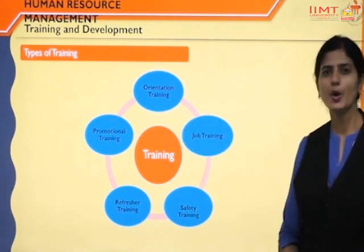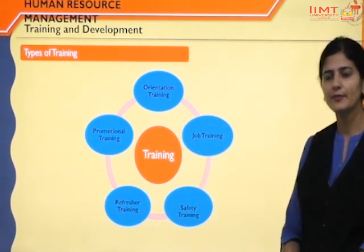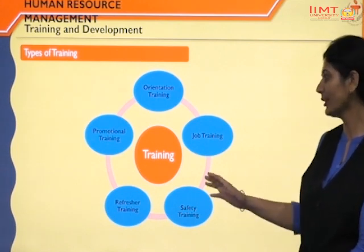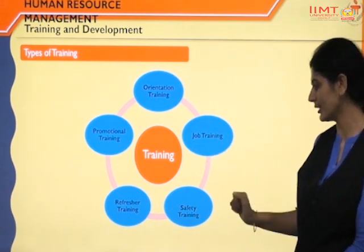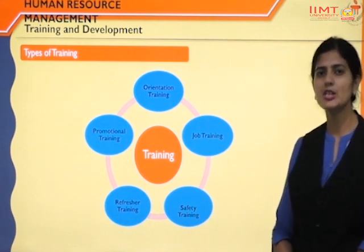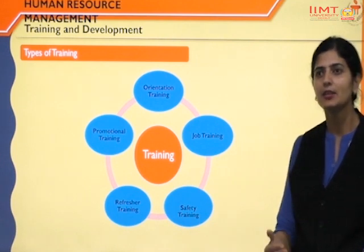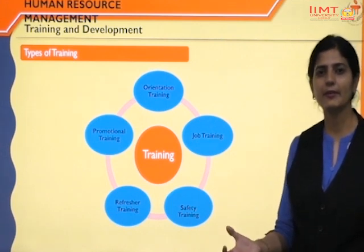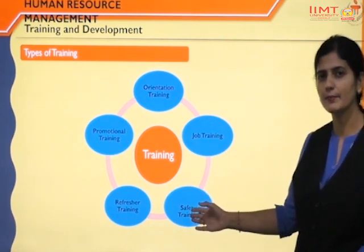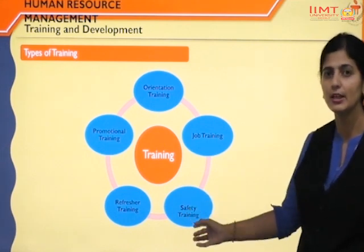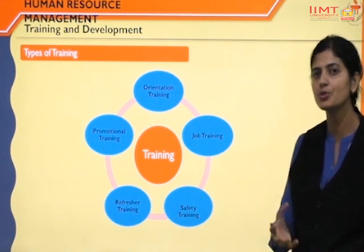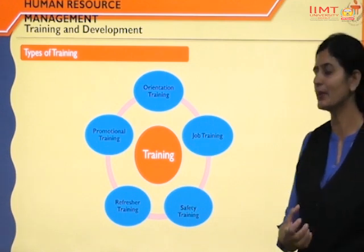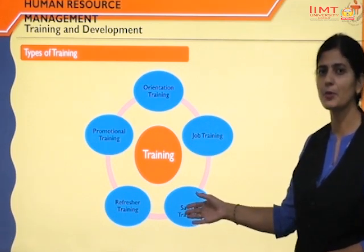Next is job training — for particular job requirements. If an employee has to perform a particular job, it requires some knowledge, skills, and abilities, and such knowledge and skills are given with the help of job training. Next is safety training — when the individual's nature of work requires safety precautions, such as working with machinery or equipment, safety training is given covering how to handle machinery, how to use equipment, and what will happen if equipment is misused.